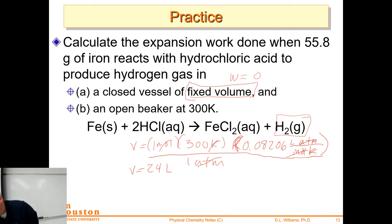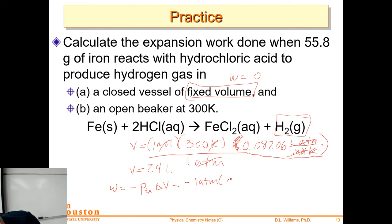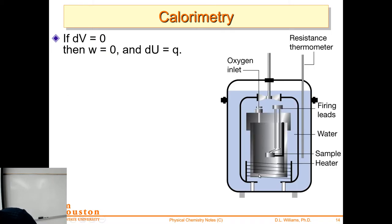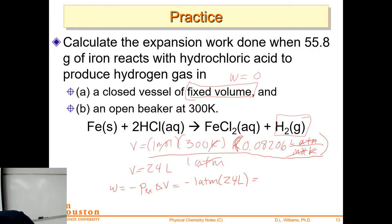The equation for work is expansion work against constant pressure: work equals negative P-external times delta V, which is negative one atmosphere times 24 liters. So our work is minus 24 liter·atmospheres.